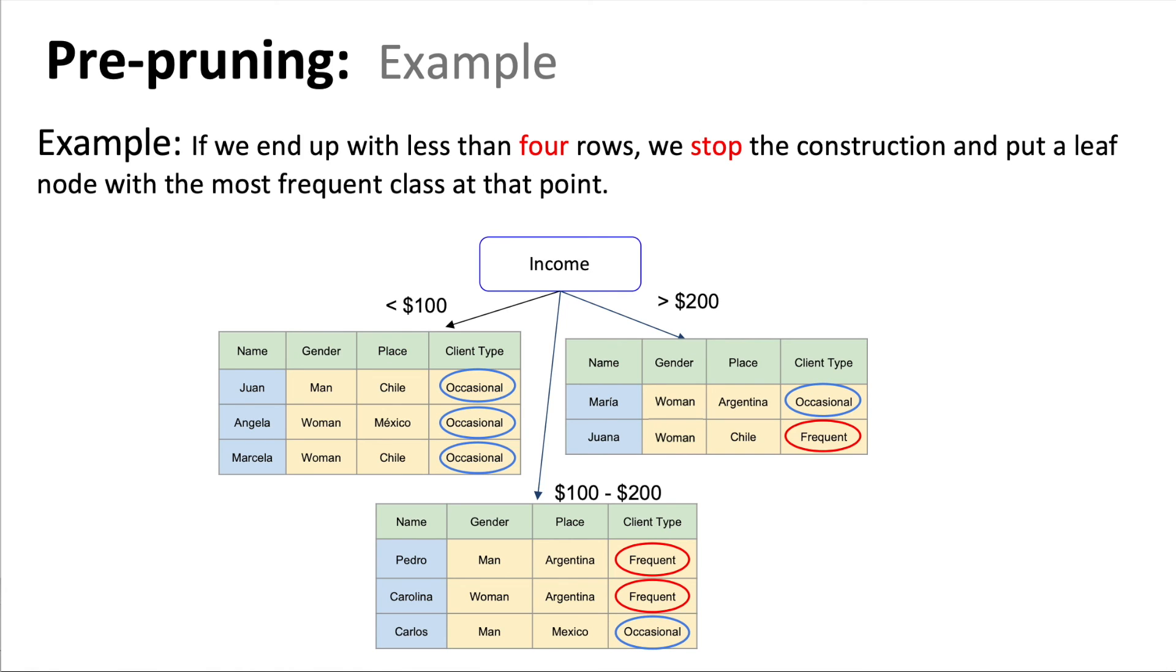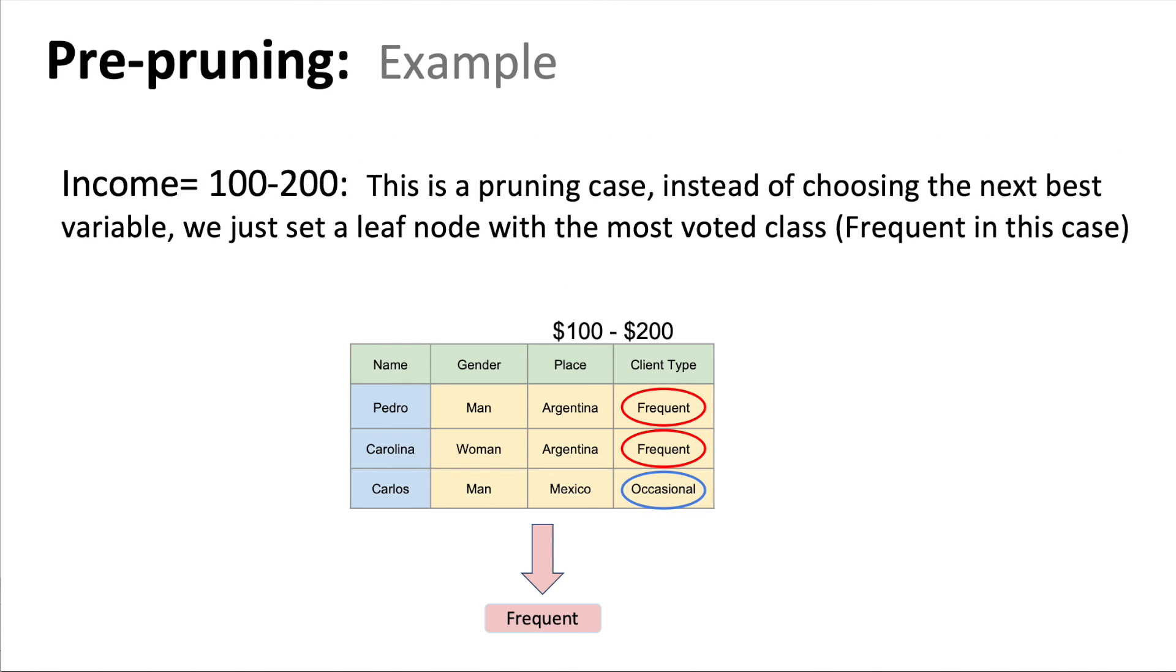In this case, we can see that all our tables have less than four rows. So instead of keep selecting the best variable, we will just set a leaf node with the most frequent class. So in this case, for example, instead of selecting the best variable between name, gender, or place, we just are going to put a leaf node with the class frequent because it has two cases compared to vocational that has just one case.